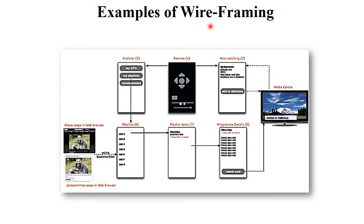The name itself indicates the concept: 'wire' means the connection between each and every screen, and 'framing' means a frame — when you click on a particular frame, the next frame opens. You can observe this in your mobile. For example, in WhatsApp there are different types of frames: chatting, calls, contacts, etc. All these frames are connected through a wire, and this concept is called wireframing.